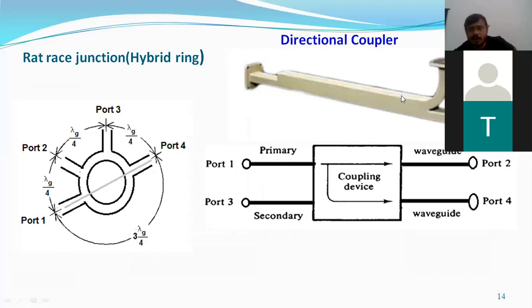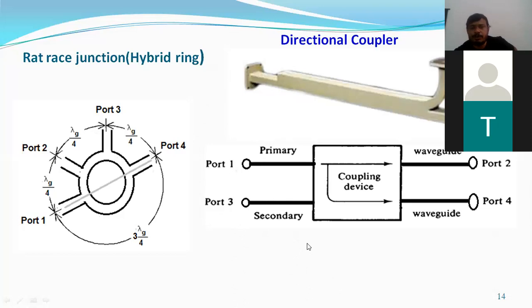The primary wave is port one and port two; the secondary wave is port three and port four. Forward power is calculated as 10 log (P1 / P2), where P1 is the power at port one and P2 is the power at port two. Coupling power: suppose I'm feeding at port one, how much power is coming at port four — that is 10 log (P1 / P3). Directivity is 10 log (P3 / P4).